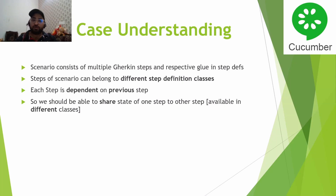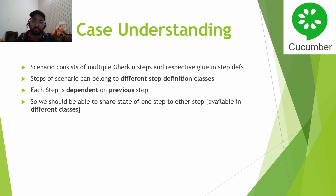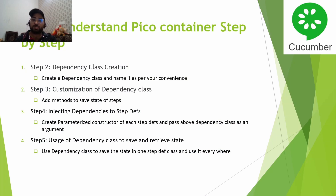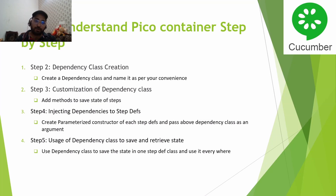To recap: we discussed what dependency injection is and how to use it to share state from one step to another when there are multiple step definition classes. We covered how to configure PicoContainer, create and customize the dependency class to store and retrieve step data, inject the dependency into step definitions so the same object is shared across all classes, and finally how to use setContext and getContext in the actual steps. Please like, share, and subscribe. Thank you.